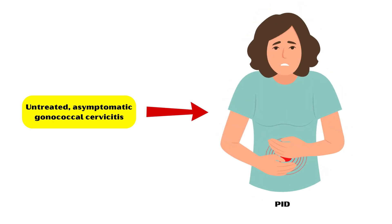Pelvic inflammatory disease manifests as lower abdominal pain, increased vaginal discharge, dysuria, cervical motion tenderness, adnexal tenderness, intermenstrual bleeding, fever with chills, nausea, and vomiting.